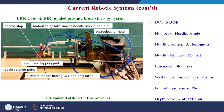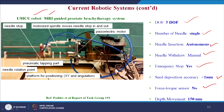Next is the robotic system developed by the research team at University Medical Center Utrecht in the Netherlands — an MRI-compatible robotic system for online MRI-guided prostate brachytherapy. This system has 5 degrees of freedom, single needle, autonomous needle insertion, and manual needle withdrawal. It is provided with an emergency stop, seed deposition accuracy less than 1 mm, no force-torque sensor, and a depth movement of 150 mm.